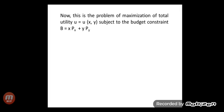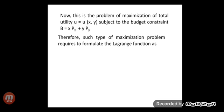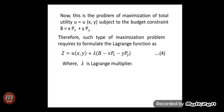This is the problem of maximization of total utility u = u(x, y) subject to the budget constraint b = x·px + y·py. Therefore, this type of maximization problem requires formulating the Lagrange function as z = u(x, y) + λ(b − x·px − y·py), which is equation number four. This is the Lagrange function where λ is the Lagrange multiplier.